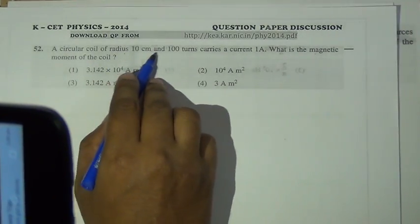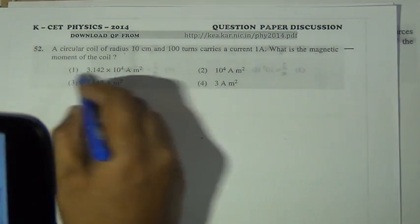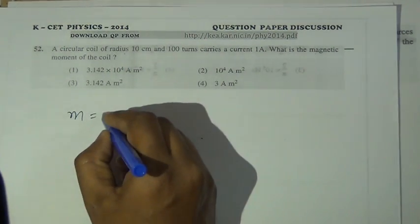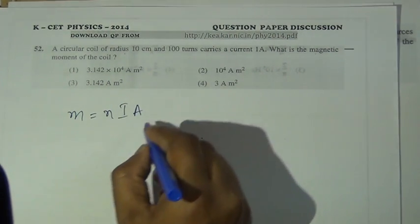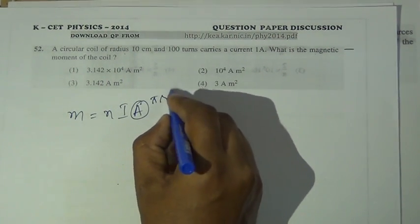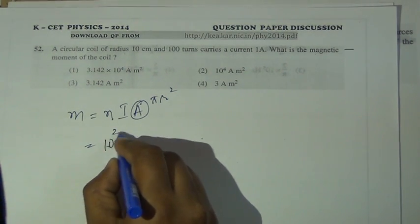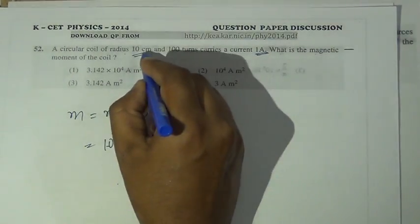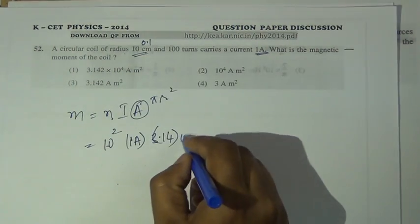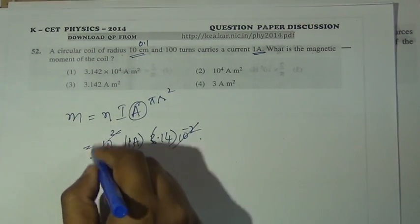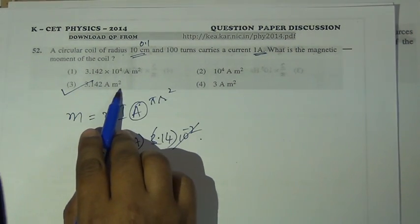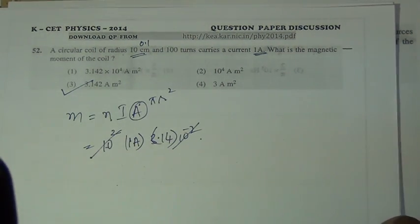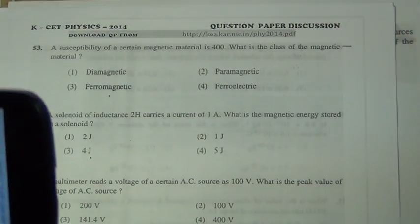A circular coil of radius 10 cm with 100 turns carries a current of 1 A. The magnetic dipole moment is M = N·I·A = N·I·πr². With N = 100, I = 1 A, and r = 0.1 m: M = 100 × 1 × 3.14 × (0.1)² = 100 × 3.14 × 10⁻² = 3.14 A·m². I hope you can see this with the low light.